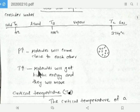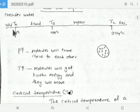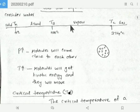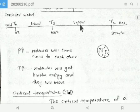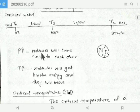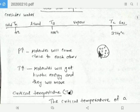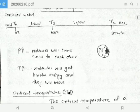When you increase the temperature, molecules gain kinetic energy and move more freely. In a solid, molecules are tightly packed. Moving from solid to vapor, particles gain more kinetic energy and more freedom. When you increase pressure, however, molecules come closer to each other.